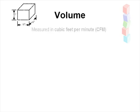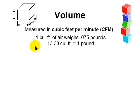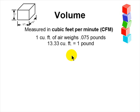Let's talk about volume first. Volume is what it says — it's cubic feet. We measure it in cubic feet. It's the 12-inch by 12-inch by 12-inch cubic foot of air. We're asking how many of these cubic feet do we circulate every minute? One cubic foot of air weighs 0.075 pounds, and it takes 13.33 of those to make one pound of air.